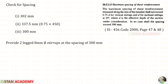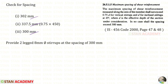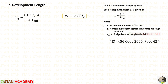We now apply the check for maximum allowable stirrup spacing. The three limits are: the calculated spacing of 302 mm, 0.75d = 0.75 × 450 = 337.5 mm, and 300 mm. The minimum of these three is 300 mm. Therefore we provide 2-legged 8 mm diameter stirrups at a spacing of 300 mm.